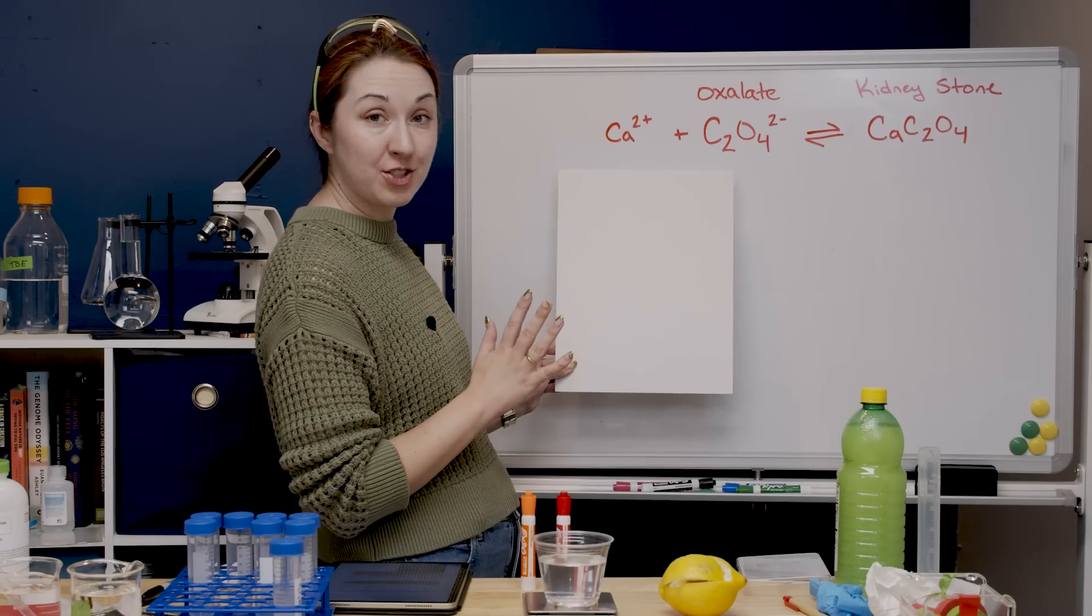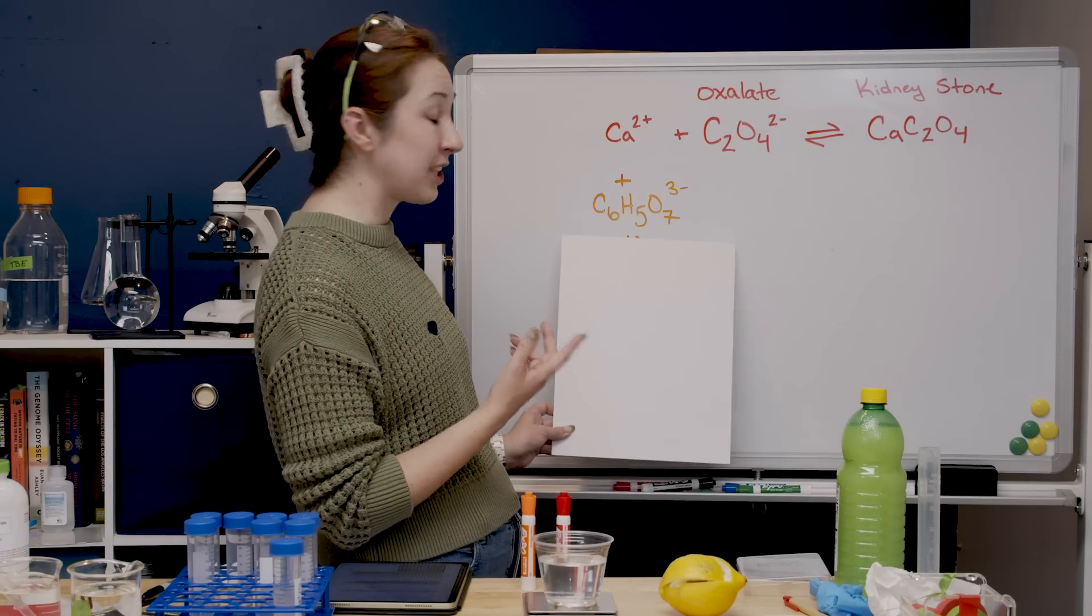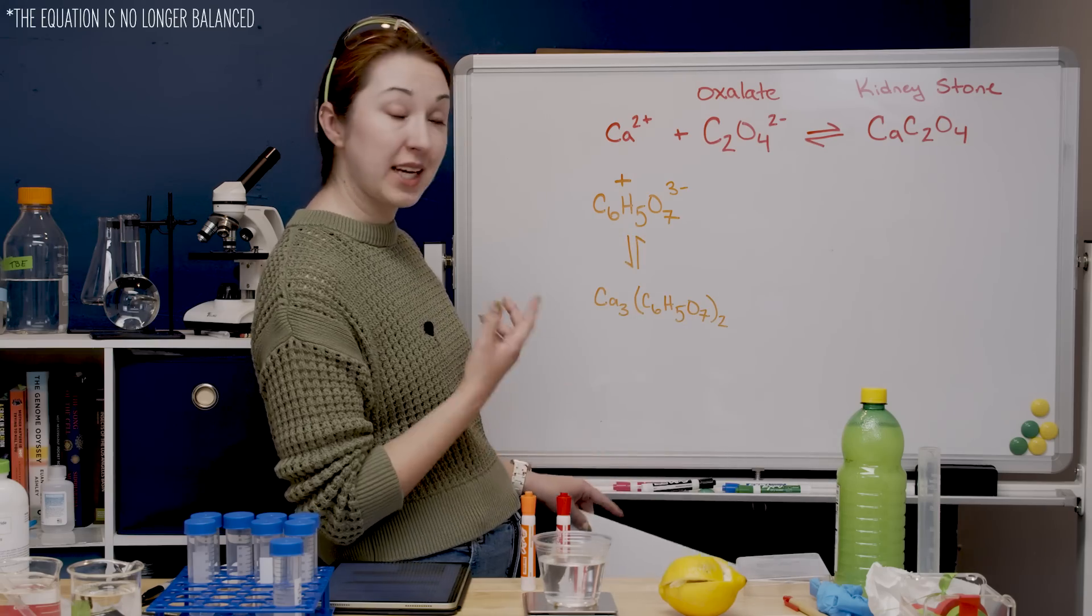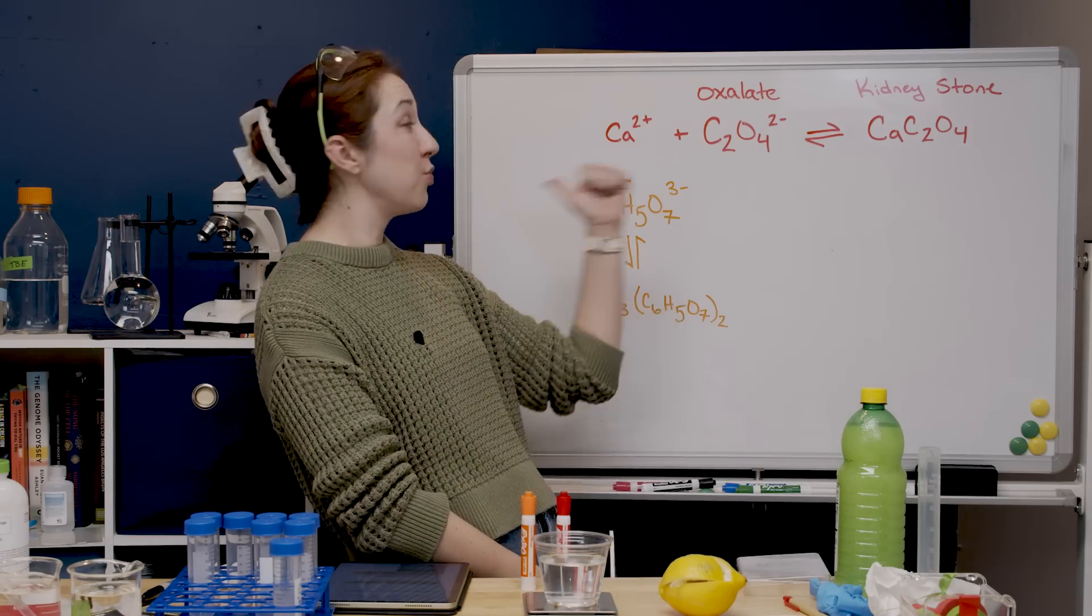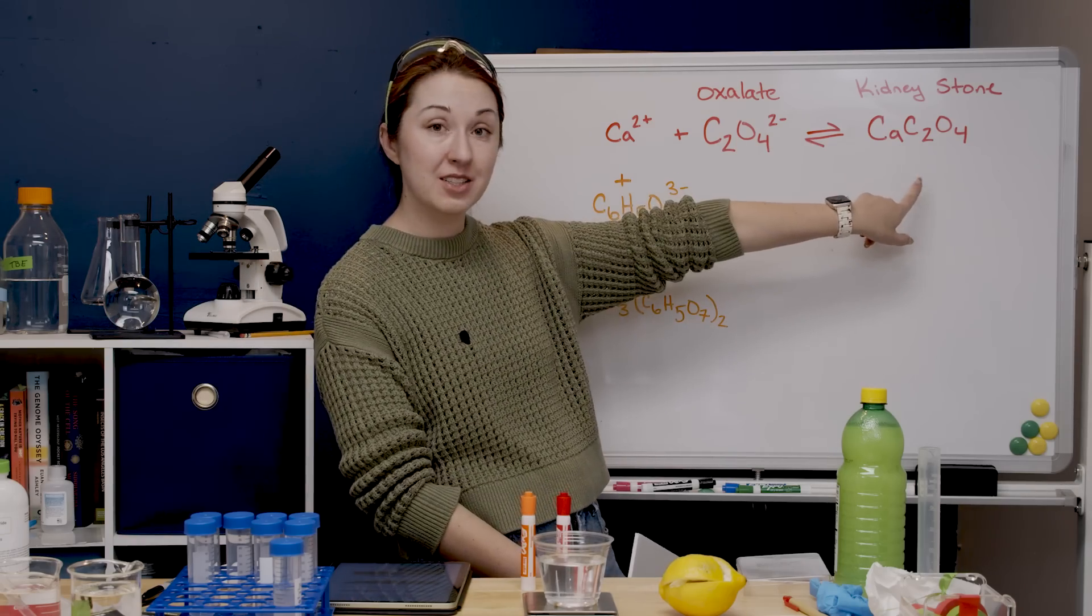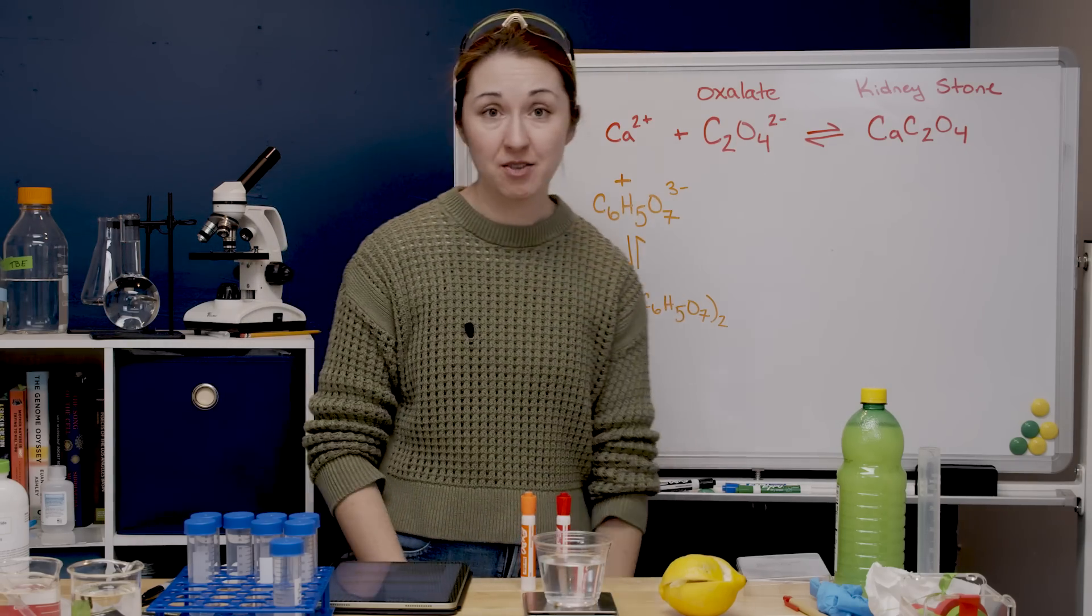Okay so at the top we have our kidney stone equation where calcium and oxalate come together to form calcium oxalate kidney stones. But if we add citrate into the equation now we can also get calcium citrate and that will push the equilibrium of this top reaction to the left away from the kidney stones. So now we are getting fewer kidney stones which is a positive thing. We like that.